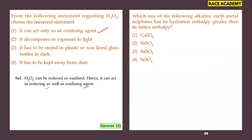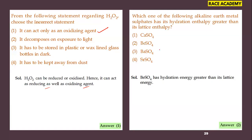Which alkaline earth metal sulfate has its hydration enthalpy greater than its lattice enthalpy? The rule is: smaller the cation size, greater the hydration enthalpy. Beryllium sulfate (BeSO₄) has hydration enthalpy greater than its lattice enthalpy. So the second option is the right answer — cation size is the key factor.